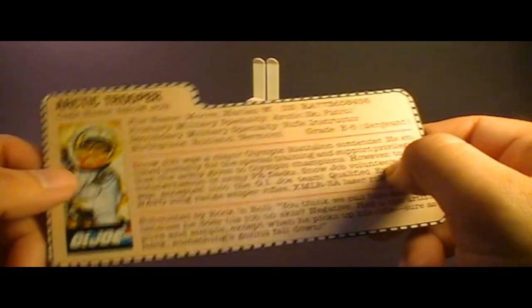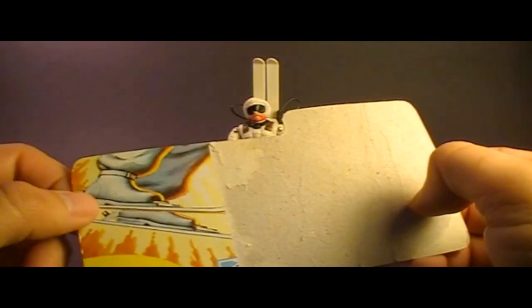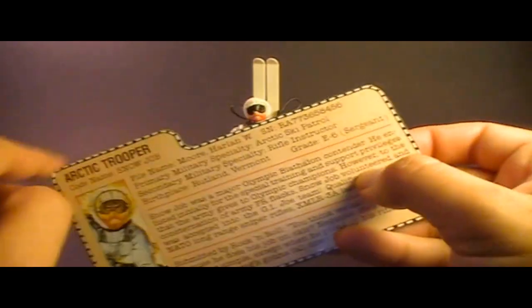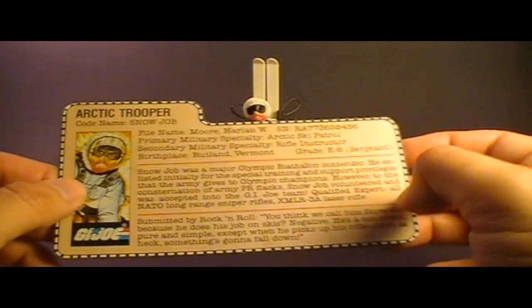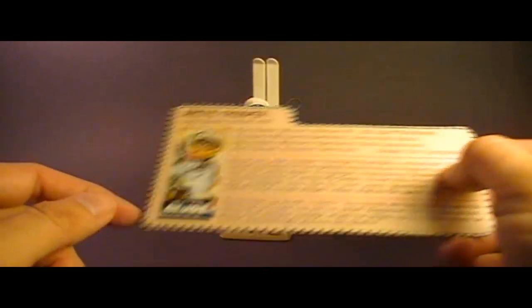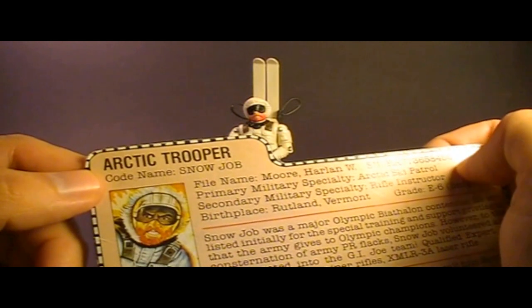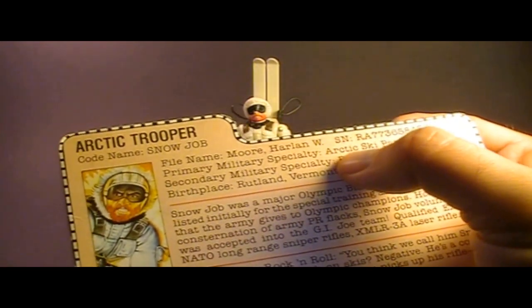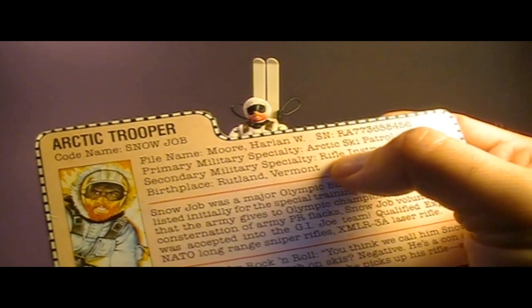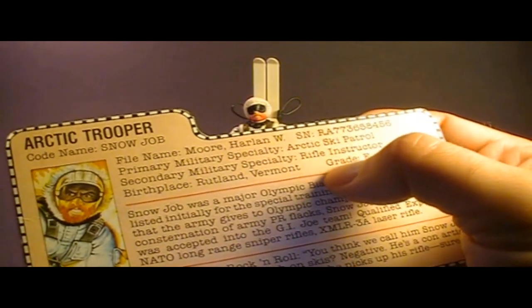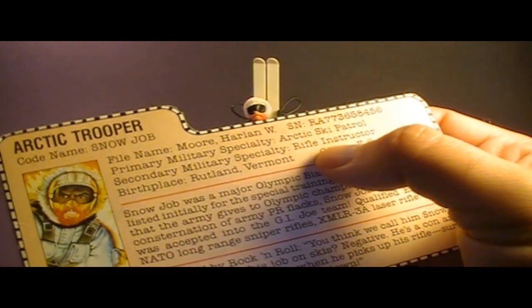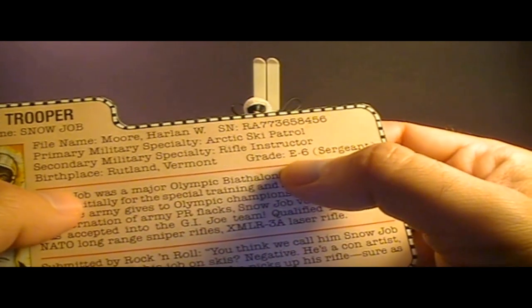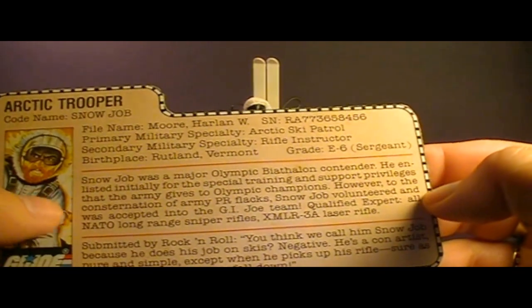Let's take a look at the file card. These file cards were printed on the back of the card on which the figure was packaged. There's a little bit of the front of the card there. And you were encouraged to cut these out because it contained a short biography of the character represented by this action figure. Up here at the top, it says Arctic Trooper, code name Snowjob. His file name is Harlan W. Moore. Primary military specialty, Arctic Ski Patrol. Secondary military specialty, rifle instructor. His birthplace is Rutland, Vermont. And his grade is E6 Sergeant.